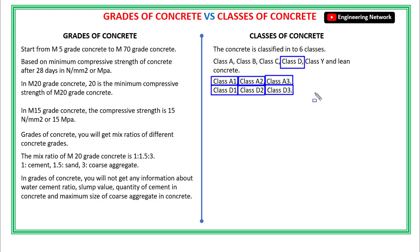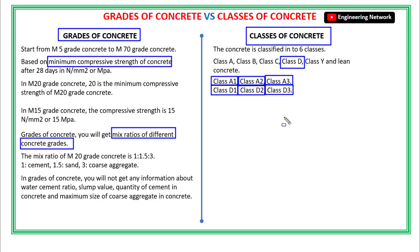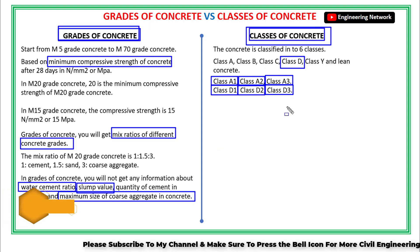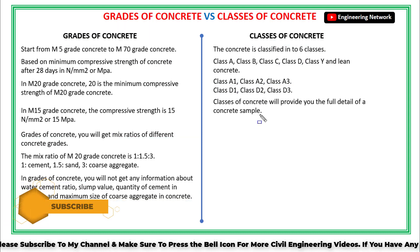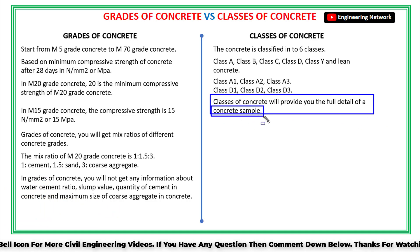Now the question is: why are classes of concrete different from grades of concrete? In grades of concrete, you get the minimum compressive strength and mix ratios of different concrete samples, but you will not get any information about the maximum size of coarse aggregate, water-cement ratio, or slump value. But in classes of concrete, you will get all this information in detail, meaning that classes of concrete provide complete information about a specific concrete sample.